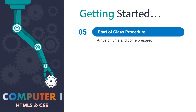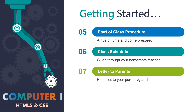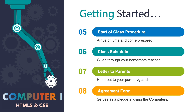The fifth guideline is the start-of-class procedure — you are expected to arrive on time and prepared. Number six: the class schedule, which will be given through your homeroom teacher. Number seven: the letter to your parents — you need to hand this out to your guardian or parents when you get back home. Number eight: the agreement form, which will serve as a pledge in using the computers.